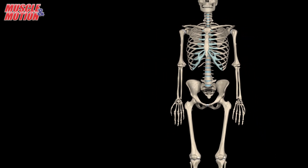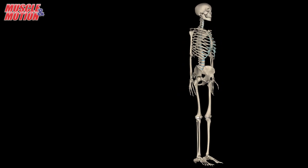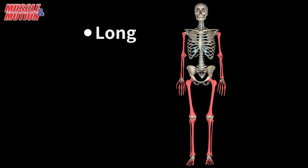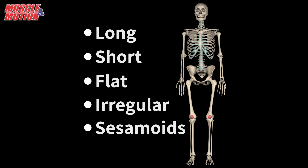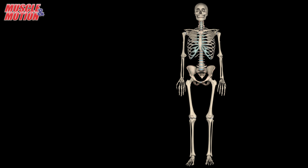The bones in the body are generally categorized into five types, and they are usually classified by their shape: Long, Short, Flat, Irregular, and the Sesamoid bones. We will now take a closer look at each bone type.